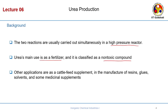Other applications of urea include use as a cattle feed supplement; it can also be used in the manufacture of resins, glues, solvents, and medicinal supplements. That is why production of urea is one of the key inorganic base chemicals, which actually gauges a country's economic development.